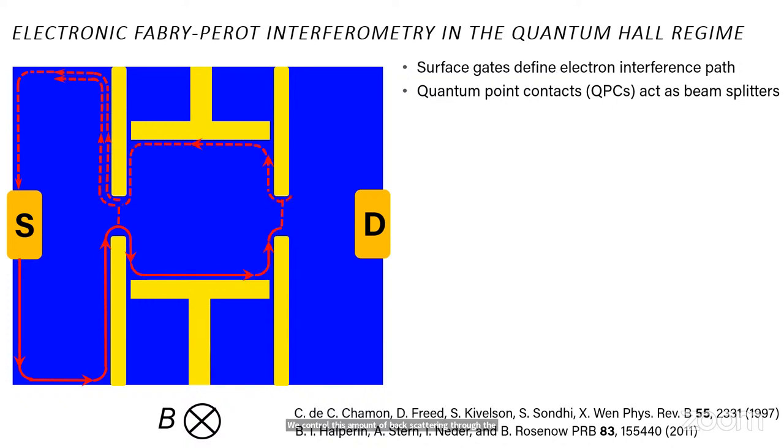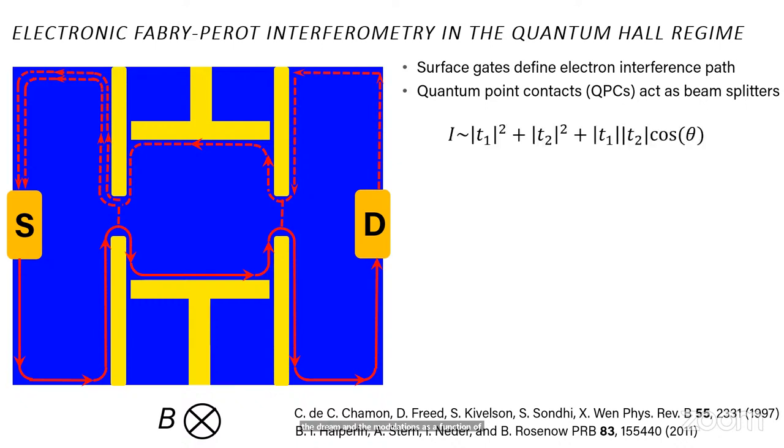We control this amount of backscattering through the voltages. Most of the current propagates through the interior of the interferometer. We, again, partially backscatter some of it to form the interior interference loop. And so it's the current that circulates around the interior of the interferometer and then recombines with the current that was initially backscattered at the first QPC that dictates the interference. And most of the current, though, of course, travels onto the drain. And the modulations as a function of system parameters of the drain current is what we actually measure.